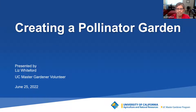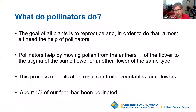So why do we need pollinators? The goal of all plants is to reproduce, and in order to do that, almost all need the help of pollinators. Pollinators help by moving pollen from the anthers of the flower to the stigma of the same flower, or another flower of the same type. This process of fertilization results in fruits, vegetables, and flowers. About a third of our food has been pollinated.